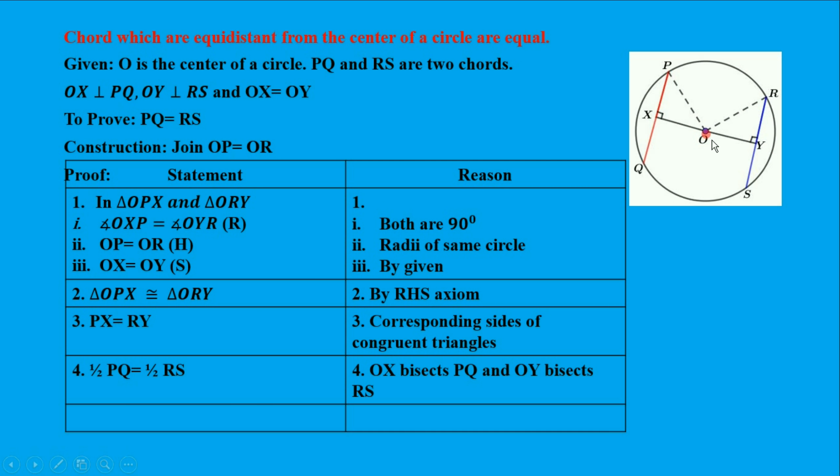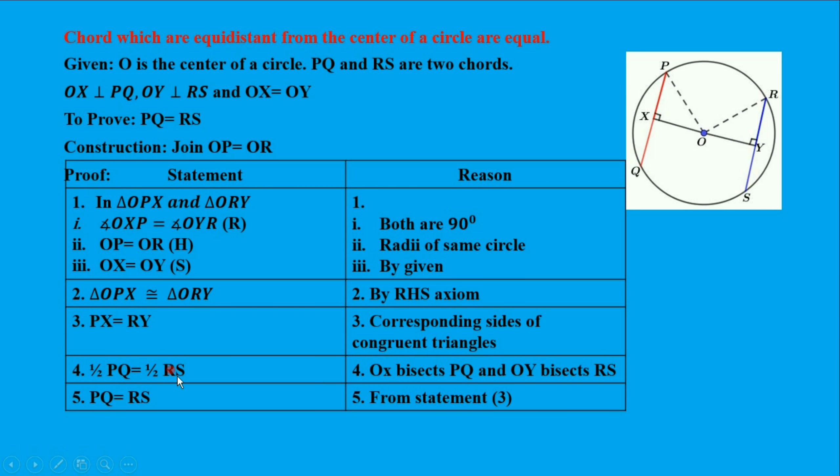This is because the perpendicular from the center of a circle bisects the chord. So OX bisects PQ and OY bisects RS. Therefore, PX equals PQ by 2, and RY equals RS by 2. Solving this, the halves cancel, and we get PQ equals RS. This completes the theorem proof.